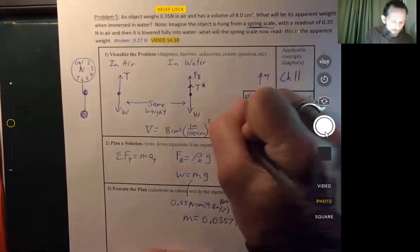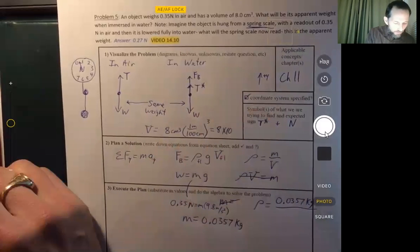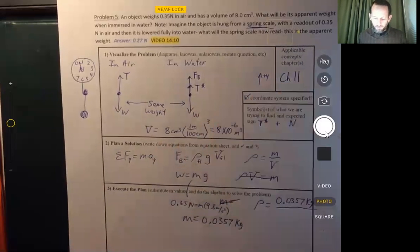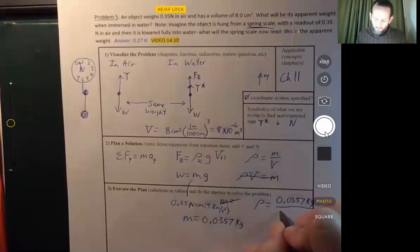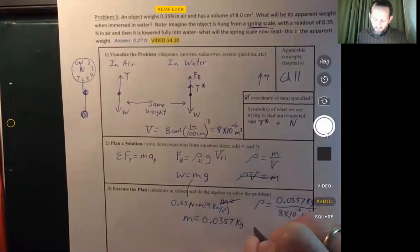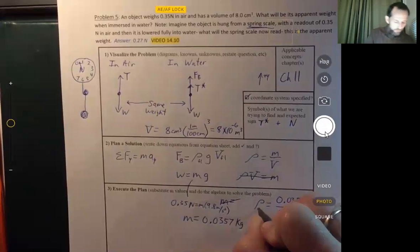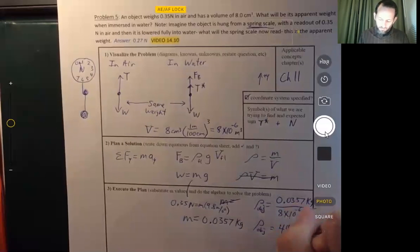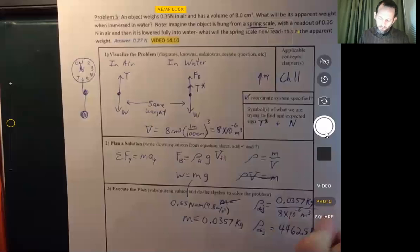We get 8 times 10 to the minus 6 cubic meters. So we can put that volume here. 8 times 10 to the minus 6 cubic meters. And then we get the density of the object here. 0.357 divided by 8 times 10 to the minus 6. And we get 4,462.5 kilograms per cubic meter.